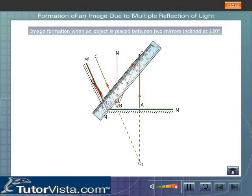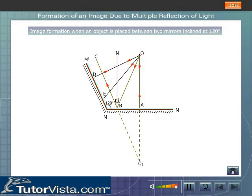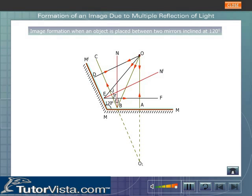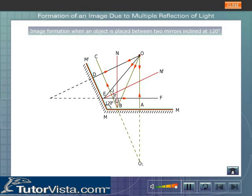Let OD and OE be incident on the mirror MM'. OE gets reflected along EF according to the law of reflection, and OD, being perpendicular to the mirror MM', retraces its path. Extend EF and OD backwards — the point of intersection O2 gives the position of the image. Thus, when the angle of inclination is 120 degrees, we get two images.